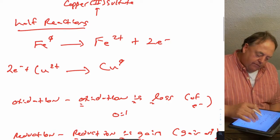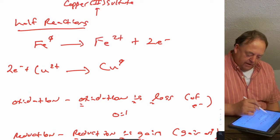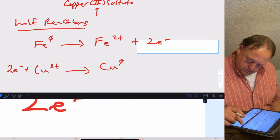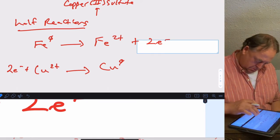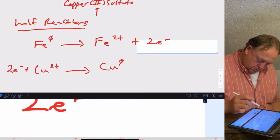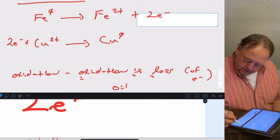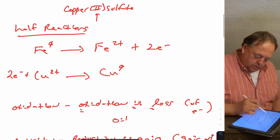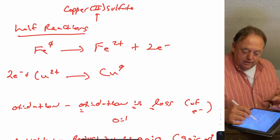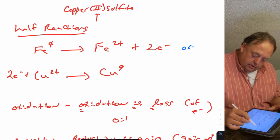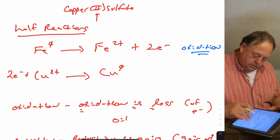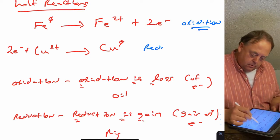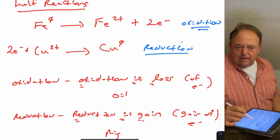Going back to the two half reactions: Fe goes to Fe²⁺ plus two electrons — iron lost electrons, so this is an example of an oxidation reaction. Copper two gained electrons — reduction is gain — so this is an example of a reduction reaction.